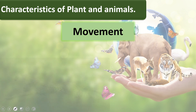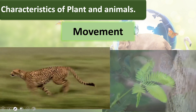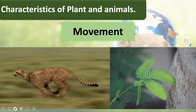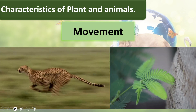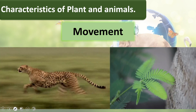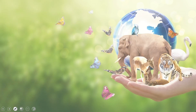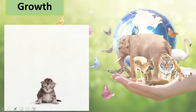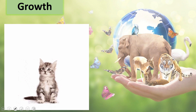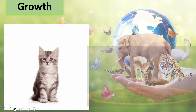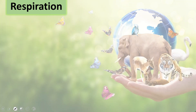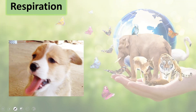Both plants and animals have movement. Animals can run and jump, whereas plants move their leaves, move with sunlight, and grow — this is how plants move. Next is growth: both plants and animals grow. Animals show growth and similarly plants also grow.